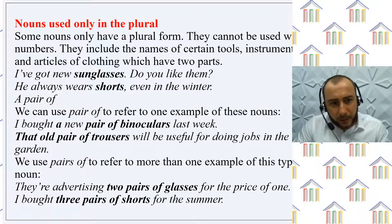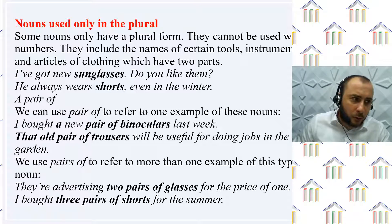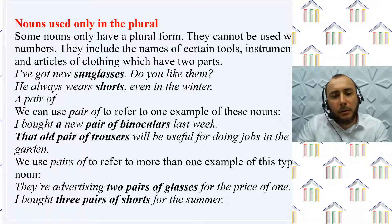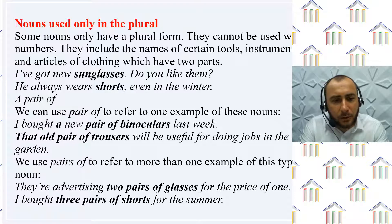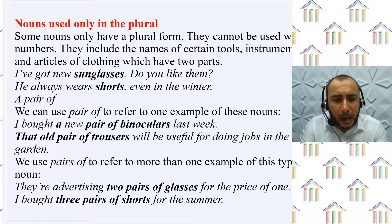Nouns used only in the plural: some nouns have a plural form and cannot be used with numbers. They include the names of certain tools, instruments, and articles of clothing which have two parts. For tools and instruments: binoculars, headphones, sunglasses, glasses, scissors, tweezers. For clothing: jeans, pyjamas, tights, knickers, shorts, trousers, pants. Examples: "I've got new sunglasses. Do you like them?" "He always wears shorts, even in the winter."